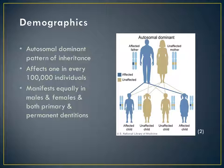The demographics of Dentin Dysplasia Type 1 show an autosomal dominant pattern of inheritance that affects one in every 100,000 individuals. It manifests equally in males and females and is present in both primary and permanent dentitions equally.